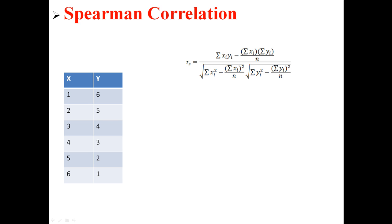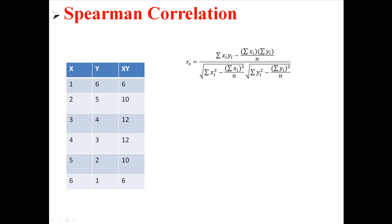And we're going to calculate this r, which should look a lot like a regular r, just now we have ranks instead of raw scores. So let's create our xy matrix and let's start working through this. First, I'm going to find the sums of all of our columns. So sum of all x is 21, sum of all y is 21, and sum of all xy is 56.